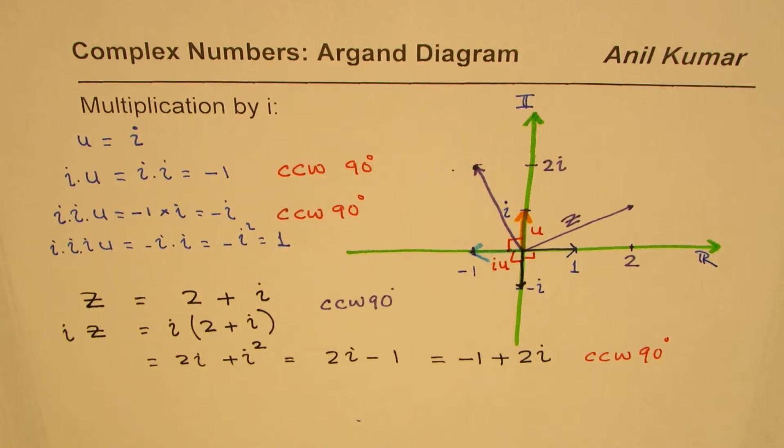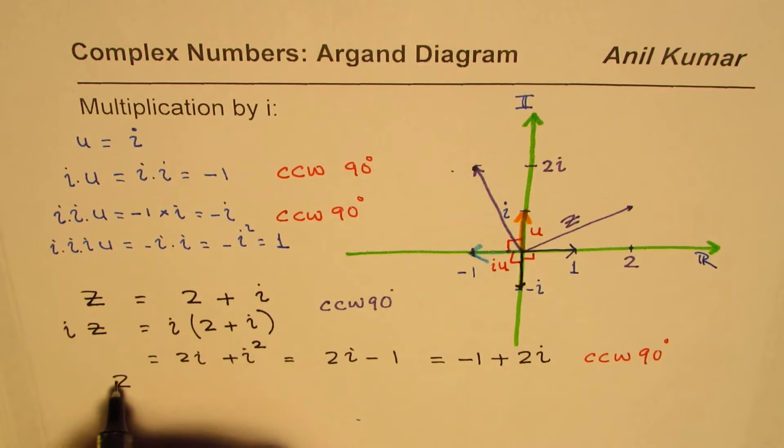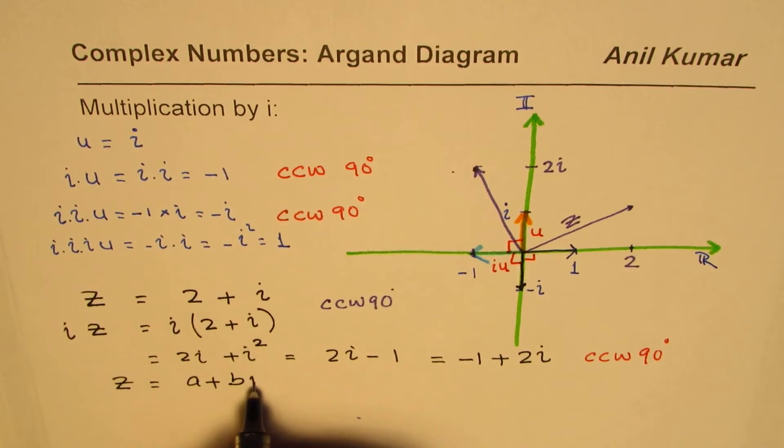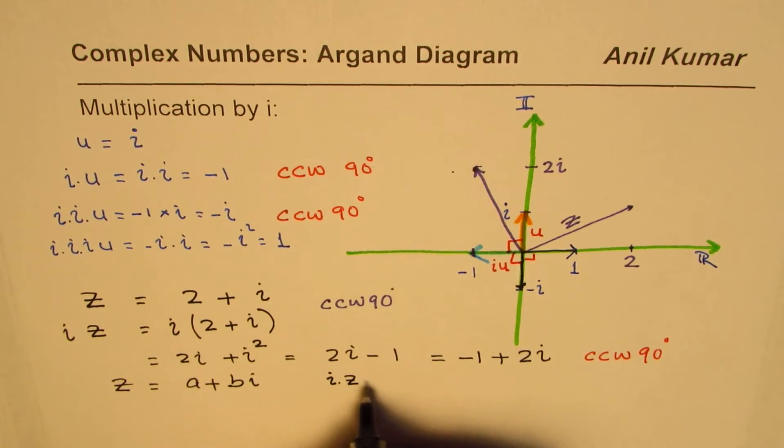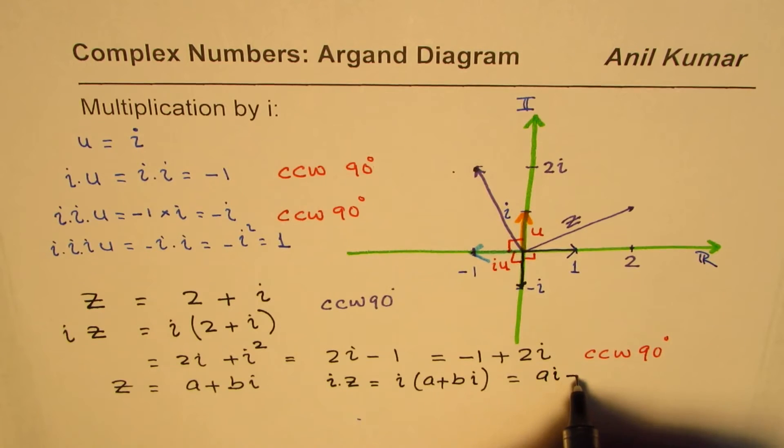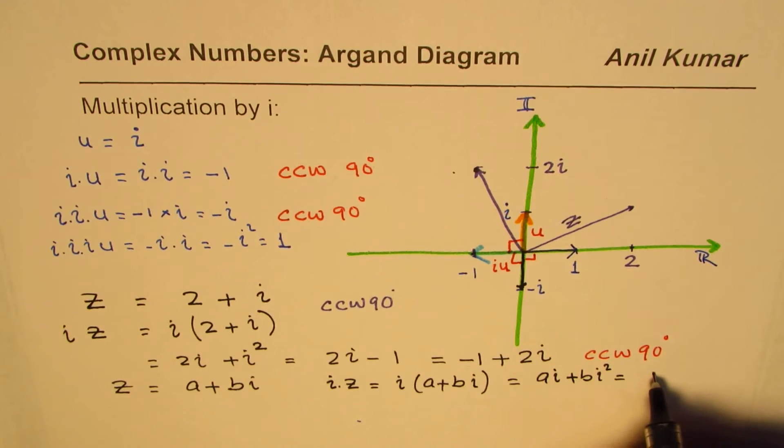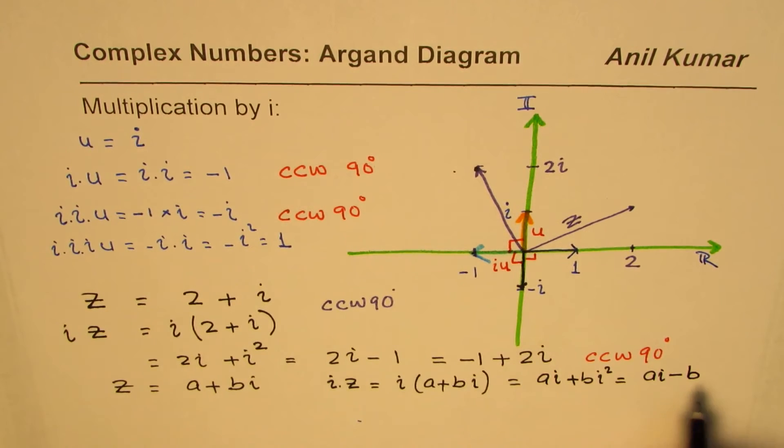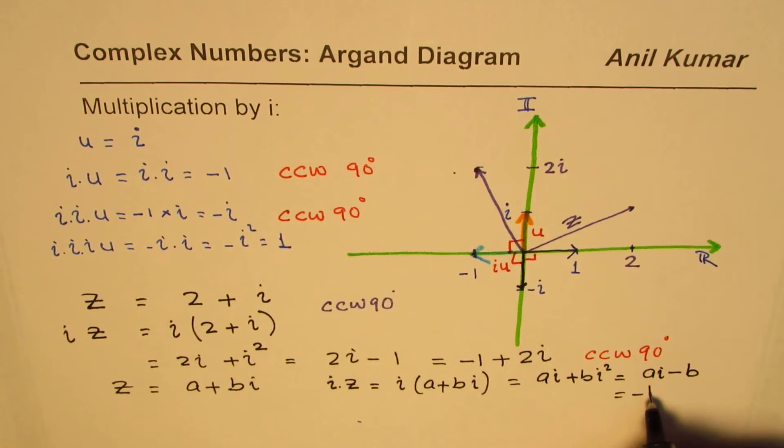Let me take now a general example. Let us say we have another complex number, which could be written as a plus bi. So that is a general way of writing any complex number. In that case, i times z will be i times (a plus bi). And that will give us ai plus bi squared, or it could be written as ai minus b, effectively.